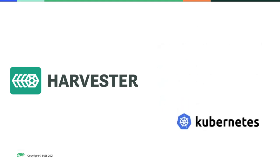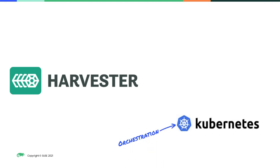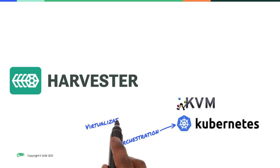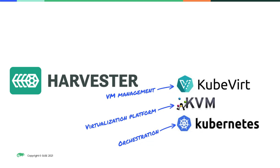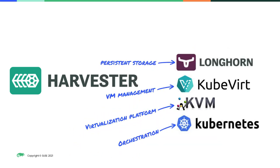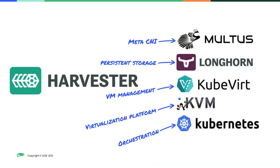For example, it uses Kubernetes at its core to provide a mature and stable orchestration layer. It also includes KVM as the virtualization platform, and it uses KubeVirt to take care of the virtualization management layer that orchestrates the running of virtual machines inside of pods. It also uses Longhorn to provide the persistent storage layer, and finally, it uses Multus, which is a meta-CNI, to allow for multiple software-defined networks.